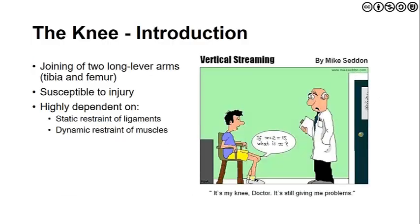As a general introduction for the knee, recognize that we are joining two long lever arms which consist of the distal tibia and the more proximal femur. Because of these lever arms and the large amount of force subjected to and around the knee, this is a joint highly susceptible to injury and therefore highly relies on the static restraint of ligaments as well as the dynamic restraints of the muscles.